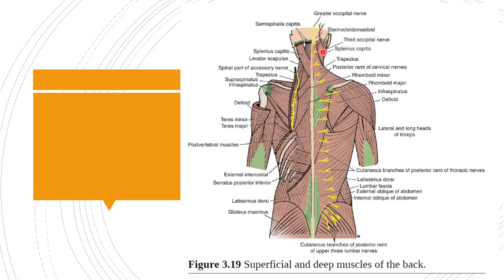The first superficial posterior axio-appendicular muscle is the trapezius. It is a big muscle of trapezoid shape. The name comes from a Greek word meaning 'irregular four-sided figure,' because the muscles of the right and left sides together form a trapezoid shape.